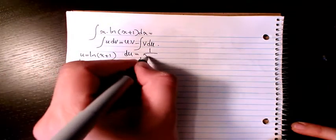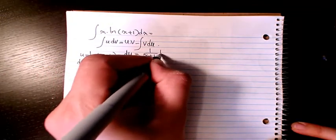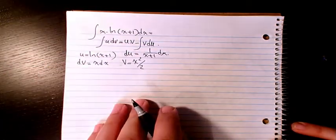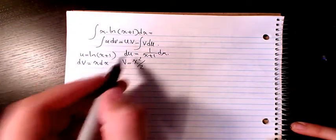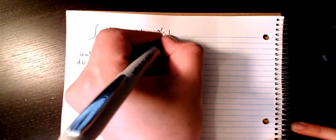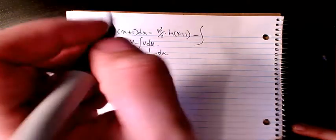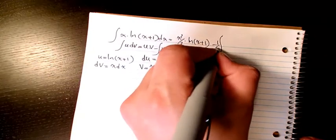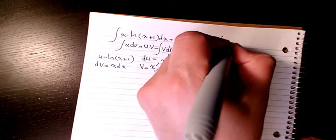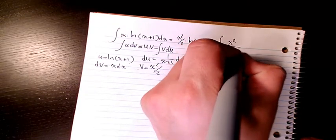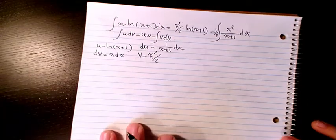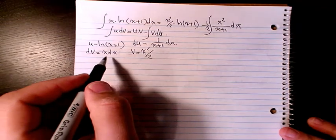The derivative of u, or du, is going to be 1 over (x+1) dx. So I will have u times v, which is x squared divided by 2 times ln(x+1), minus the integral of v du — that's going to be 1/2 times x squared divided by (x+1) dx.